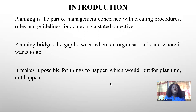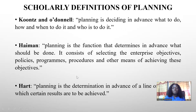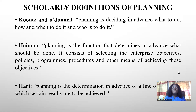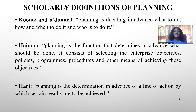Planning makes it possible for things to happen which would, but for planning, not happen. A lot of writers have tried to define planning. Kant and O'Donnell said that planning is deciding in advance what to do, how and when to do it, and who is to do it. You can look through to see which of the definitions best suits your own understanding of planning.